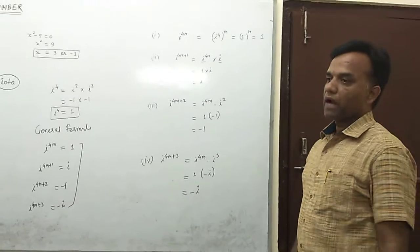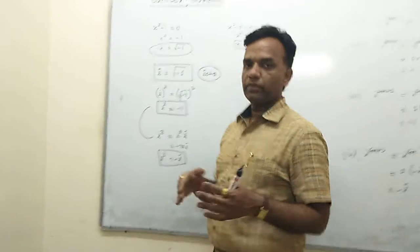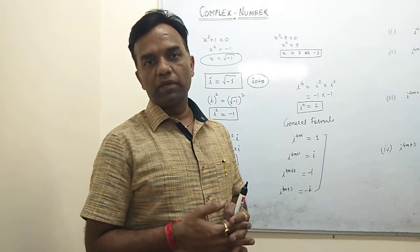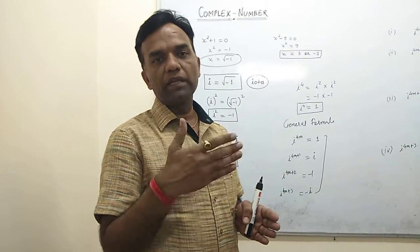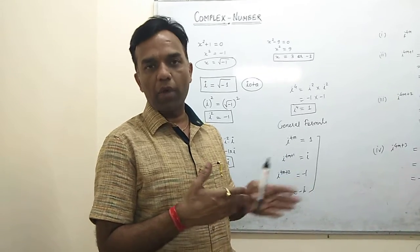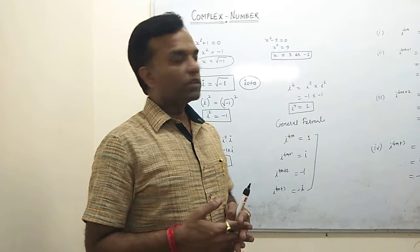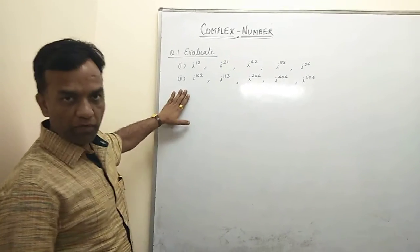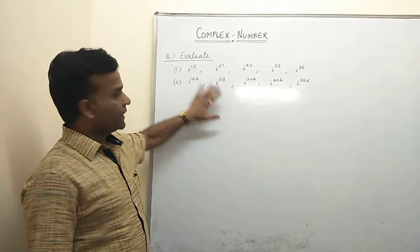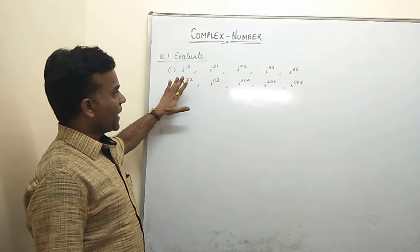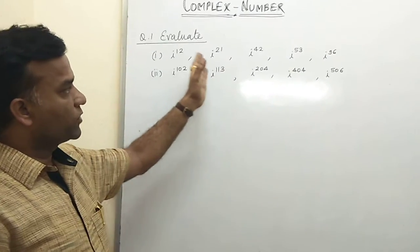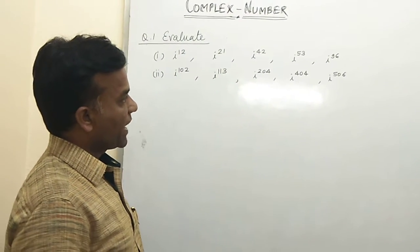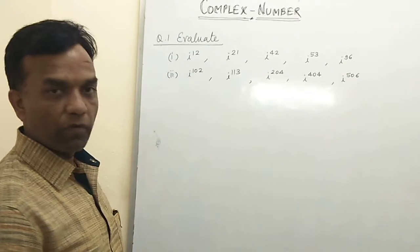Now, iota plays a very important role in the complex number formula. We solve some examples based on the concept of iota, involving different powers of i. We evaluate and simplify the value of i with powers such as 12, 21, 42, 53, and 96. For each, we convert the power into a multiple of 4 and check the remainder.